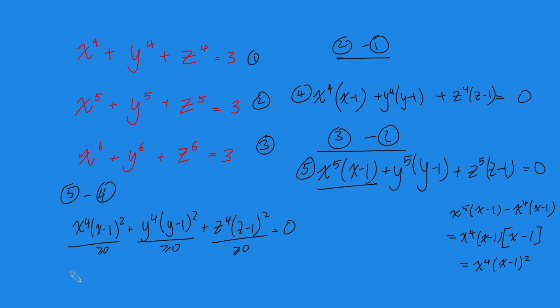So, that means that this first guy is 0, so that means that either x is 0 or x is 1. Same thing here, so we get that y is 0 or y is 1. And the same thing here, z is 0 or z is 1.